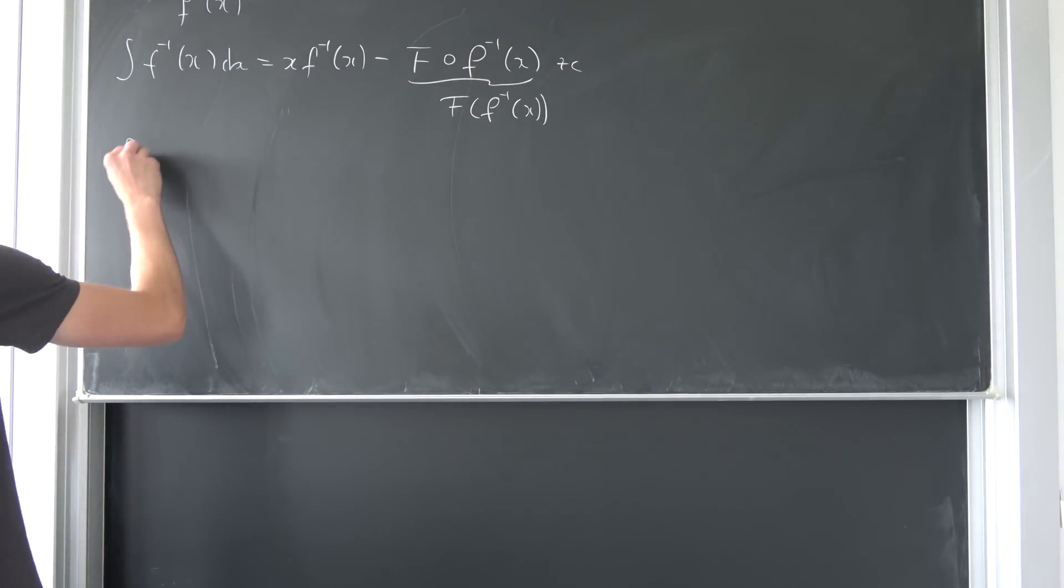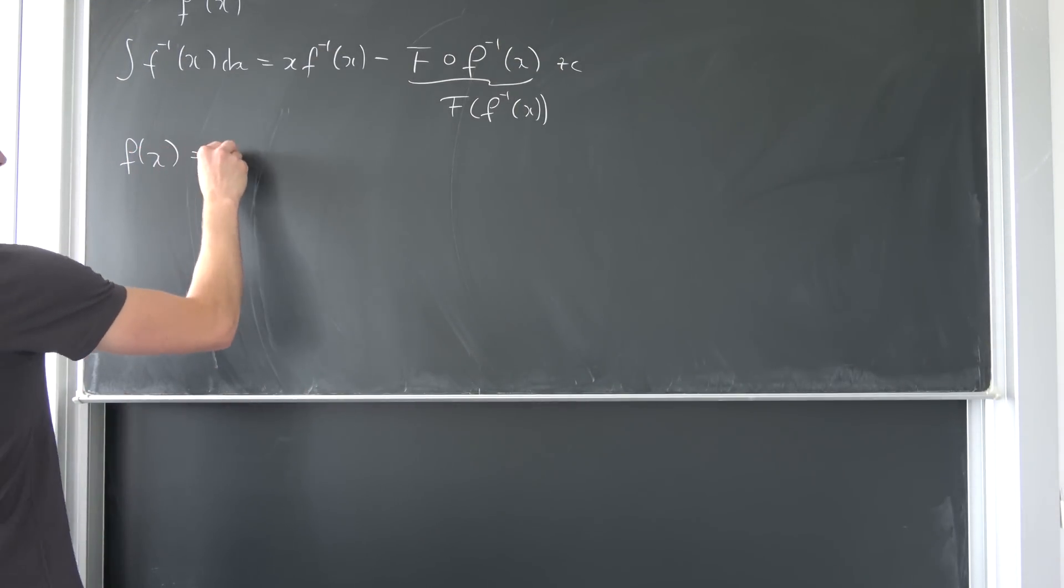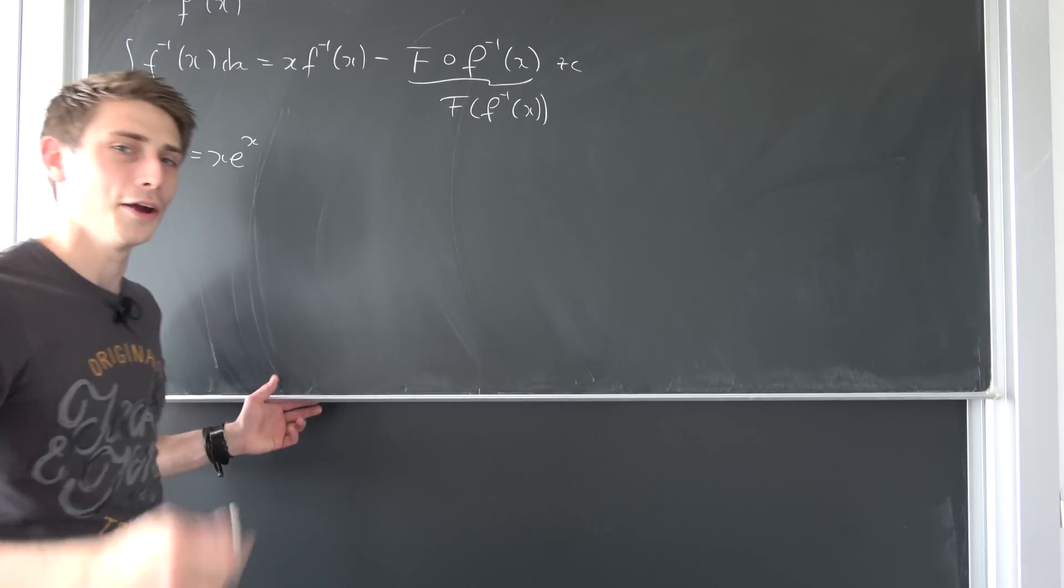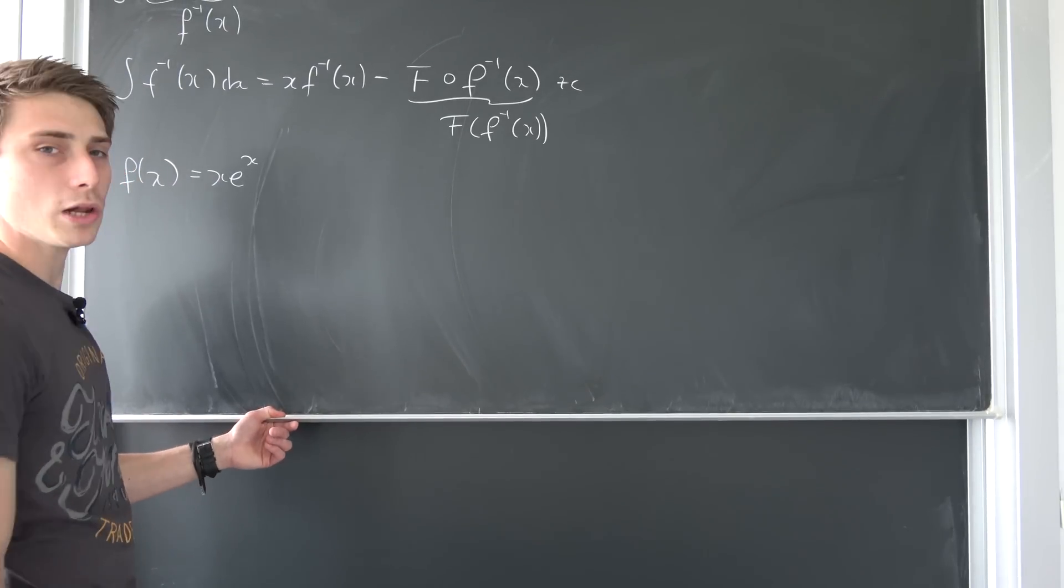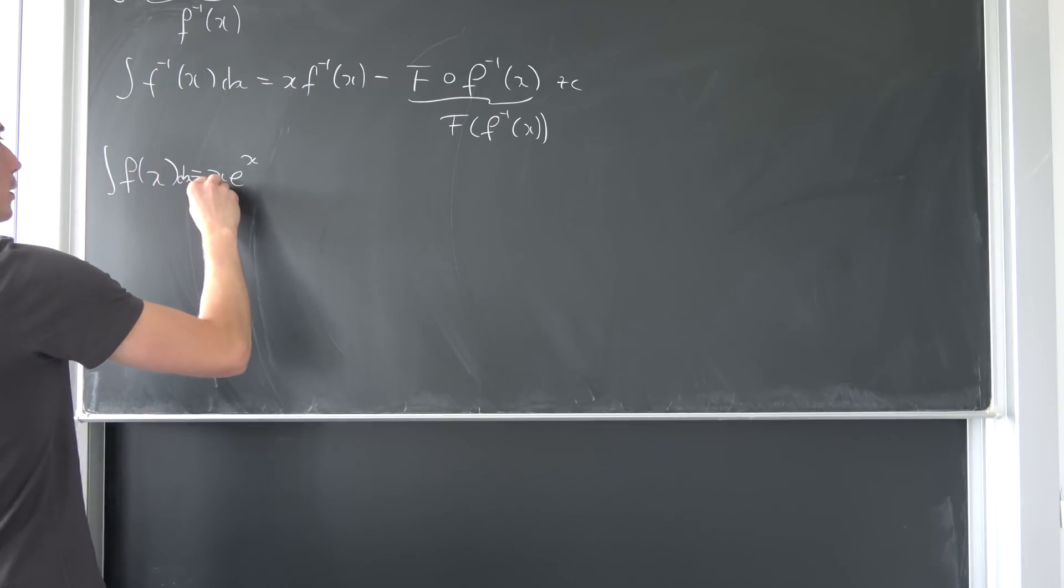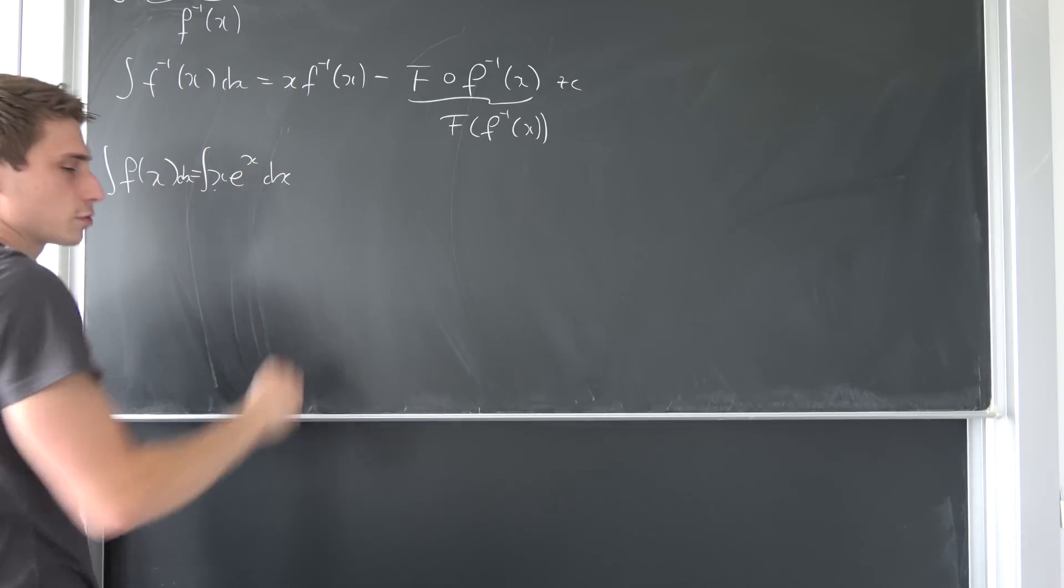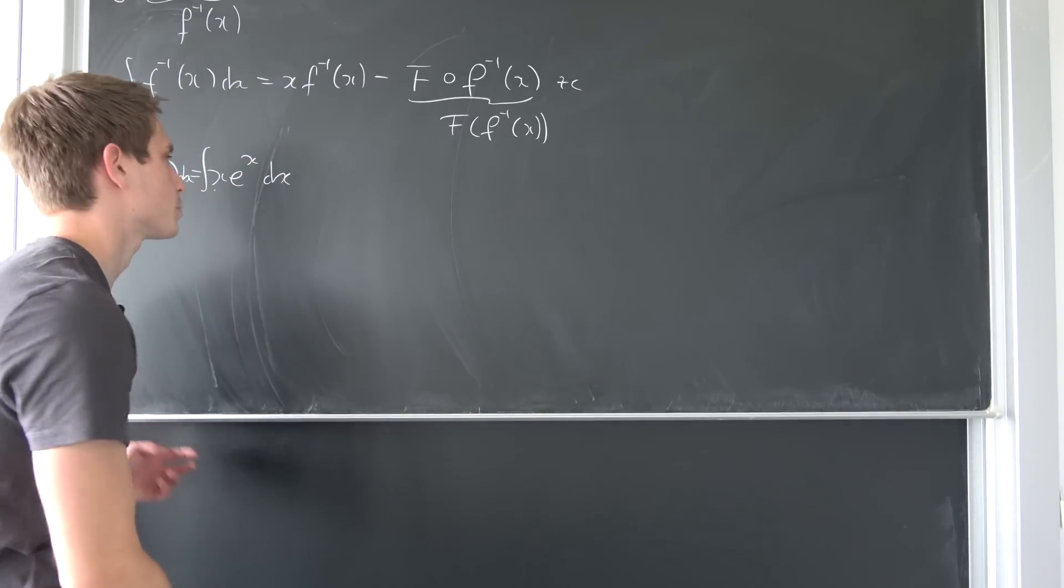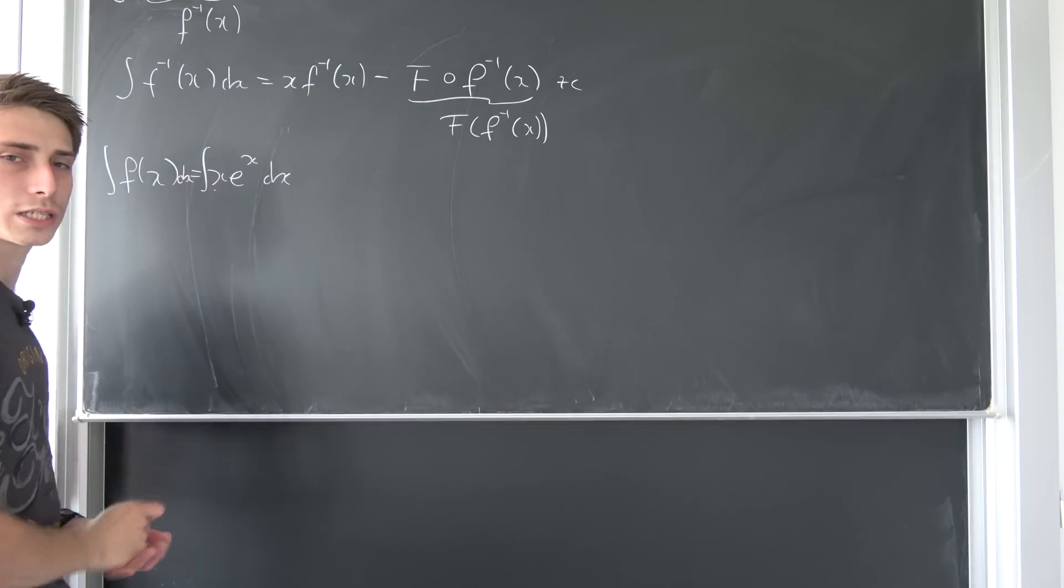Well, it's exactly the function f of x being defined as x times e to the x. I told you that before, and all we really need to do is to find the anti-derivative, the primitive of this thing. So let's integrate both sides with respect to x, and how could we integrate something like this?